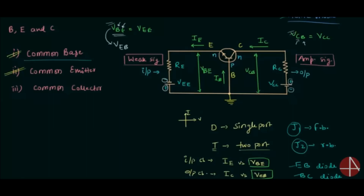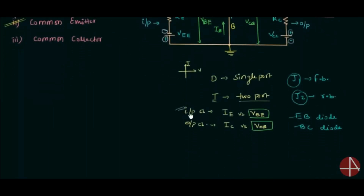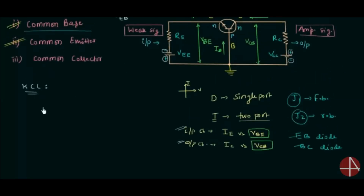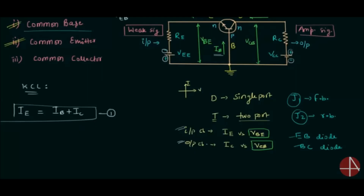I am not going to explain the input and output characteristics in this lecture; we will continue with them in the next lecture. In this lecture I will use KCL to obtain the relation between the emitter current, the base current, and the collector current. From Kirchhoff's current law, the sum of entering current equals the sum of leaving current. In this circuit, IE is the leaving current and it equals IB plus IC, because they are the entering currents. This is an important equation and it is true for active mode of operation only.